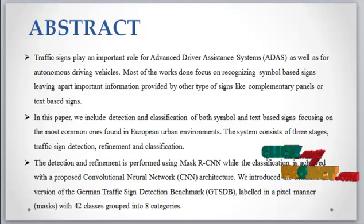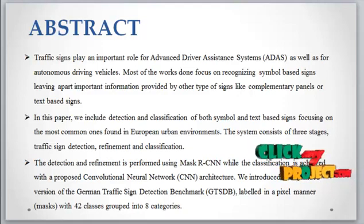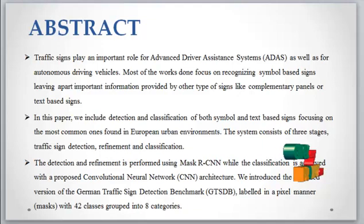Most active work focuses on recognizing simple basic signs, leaving out important information provided by other types of signs like complementary panels or text panels. Complementary panels include no passing, stop, no entry, and children crossing. Text-based signs include danger and accident zones.